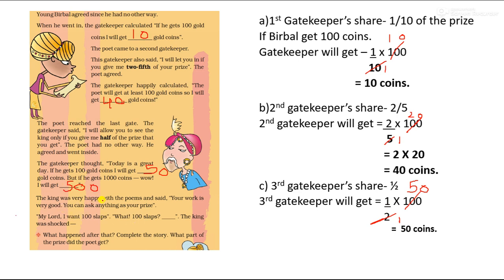The king was very pleased with the poems and said: 'Your work is very good, your poems were excellent. You can ask for anything as your prize.' Birbal replied: 'My lord, I want 100 slaps.' The king was shocked — 100 slaps!